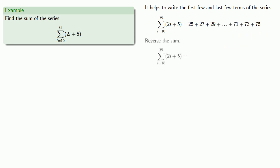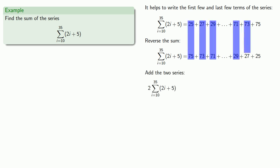And the term before that corresponds to i equals 33 so it's going to be. Now if I reverse the sum. Then add down the columns we see that every pair of terms adds to 100. So twice the sum of the series is the sum of a whole lot of hundreds.